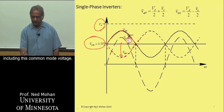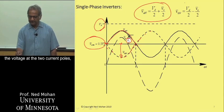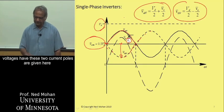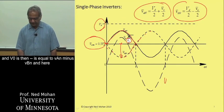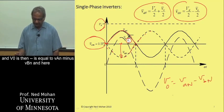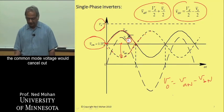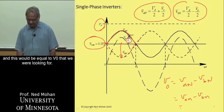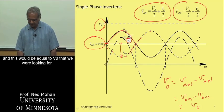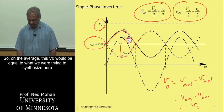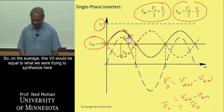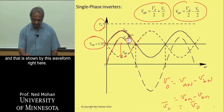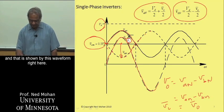And so, including this common mode voltage, the voltage at the two current ports are given here. And V0 is then equal to VAN minus VBN. And here, the common mode voltage would cancel out. And this would be equal to just VAN minus VBN, which would be equal to V0 that we were looking for. So on the average, this V0 would be equal to what we were trying to synthesize here, and that is shown by this waveform right here.